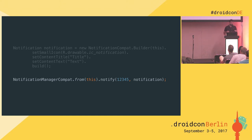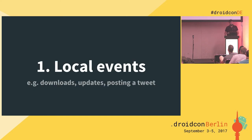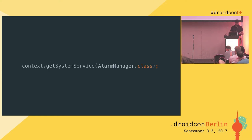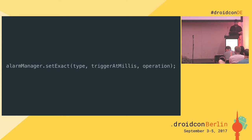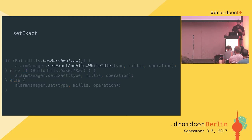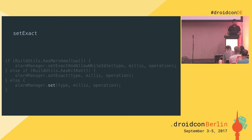There are several types of triggering. The first is local events — most of the time you're just reacting to a click: download this, update this, posting a tweet. The second is much more interesting: it's based on AlarmManager. Being able to provide the right information at the right moment is a 'wow' effect for the user. AlarmManager is a system service you get from context. You call setExact with a type, a trigger time in milliseconds, and a PendingIntent operation. It's not that simple though — Google didn't provide a compat, so it changed across APIs. For Marshmallow and above, use setExactAndAllowWhileIdle to wake the device even in doze mode. For KitKat, use setExact. Before KitKat, use set.